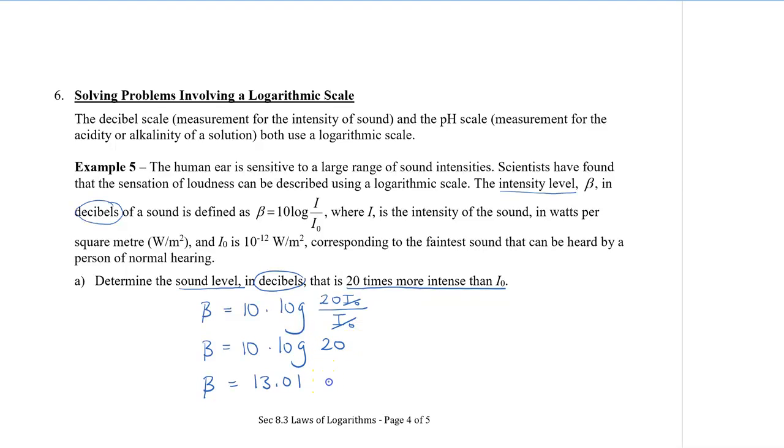And then this, we are going to plug it into our calculator. So we are going to go 10 times log 20. And we get that β is equal to 13.01. And decibels is d, lowercase d, and capital B. So this means that a sound, which is 13.01 decibels in strength, is actually 20 times more intense than i₀. Where i₀ is the faintest sound that can be heard by a person of normal hearing.